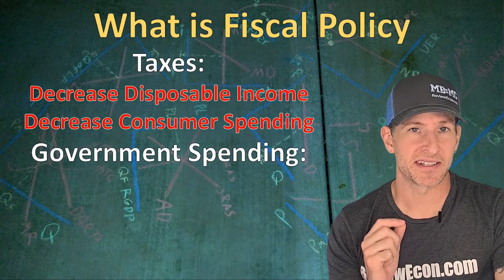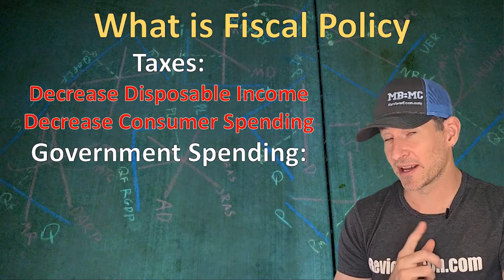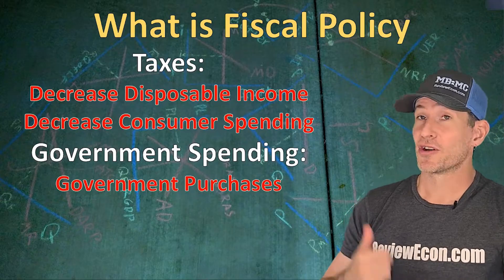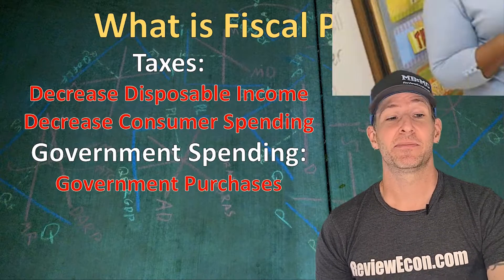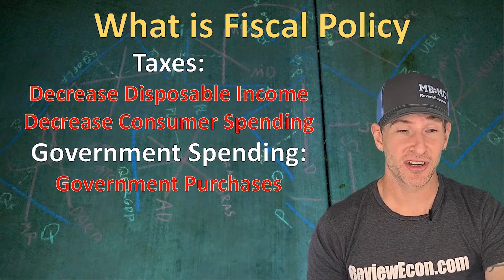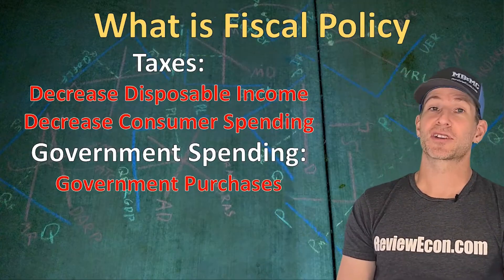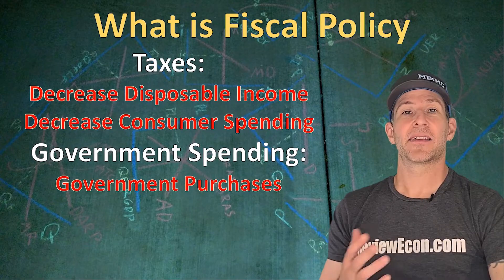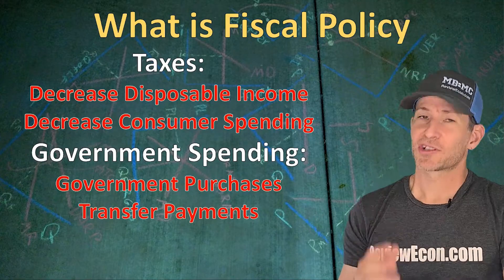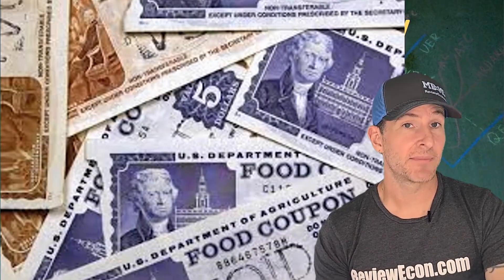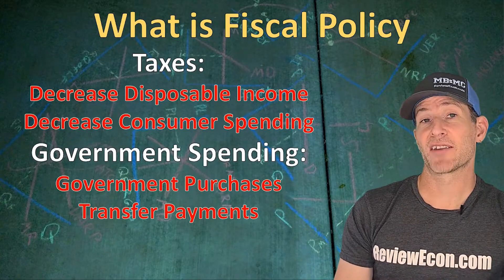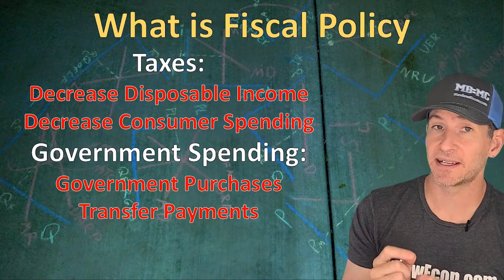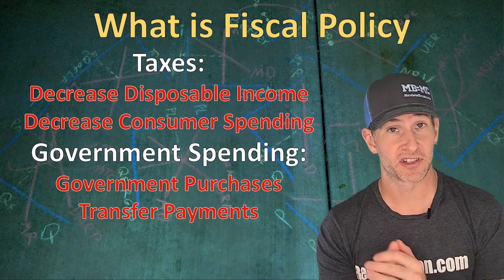The next tool is government spending. When consumers are not spending, the government can spend directly. Government spending includes government purchases — things like tanks for our military, the services of a teacher, or the construction of a highway. We call those government purchases infrastructure, and they can actually boost the long-run growth of the overall economy. Another type of government spending is transfer payments — things like food stamps or unemployment compensation — where the government gives money to people who are likely to spend it. Increasing transfer payments increases consumer spending, and decreasing transfer payments decreases consumer spending.